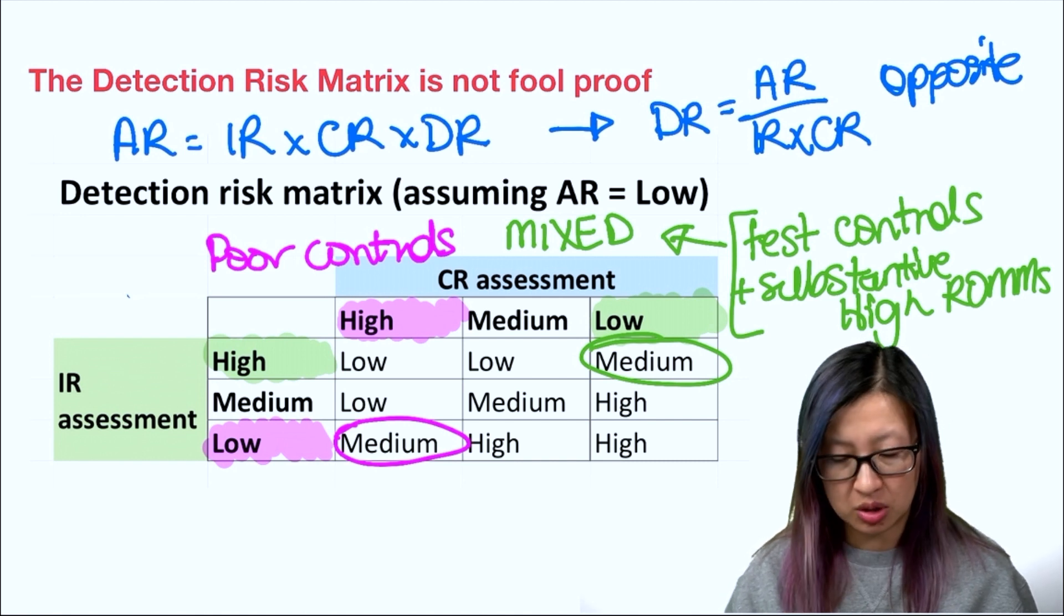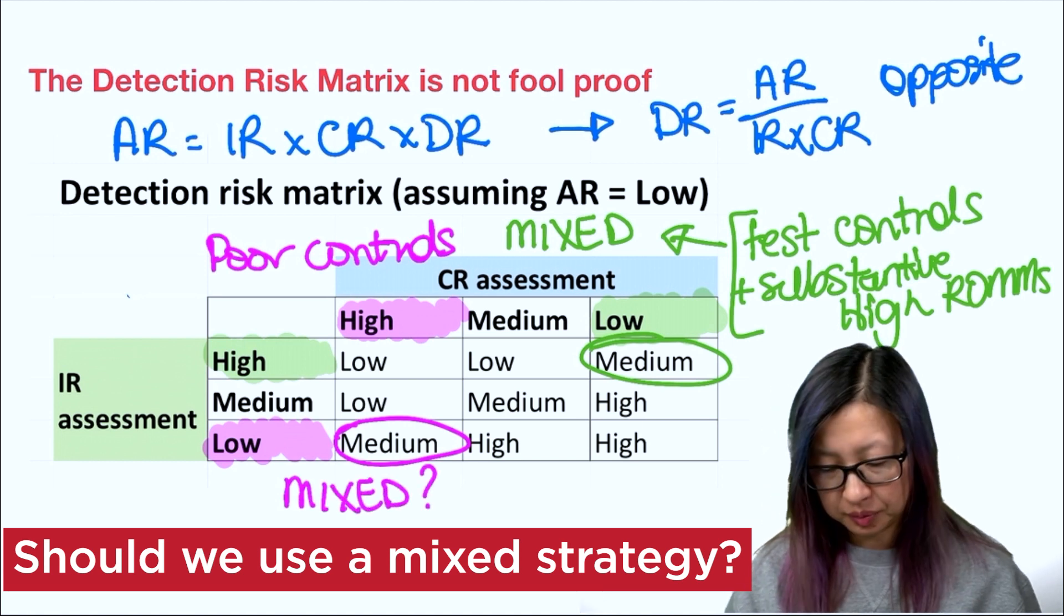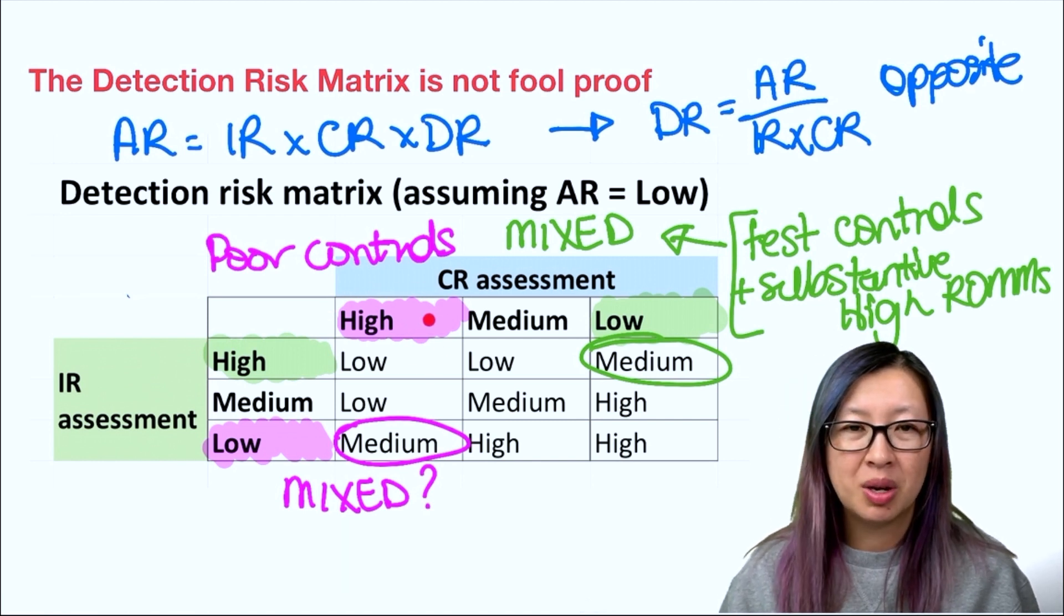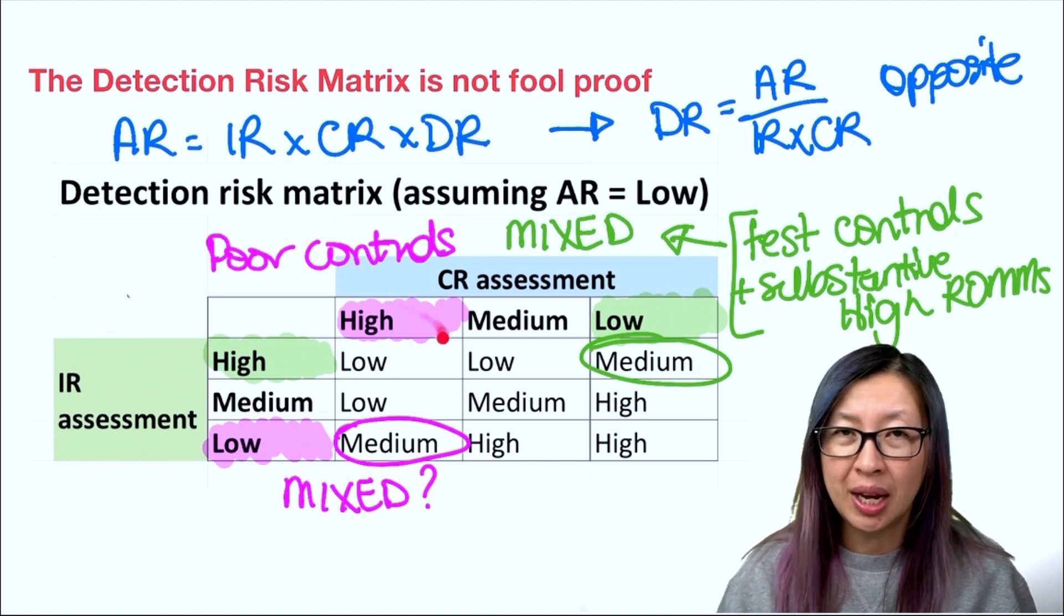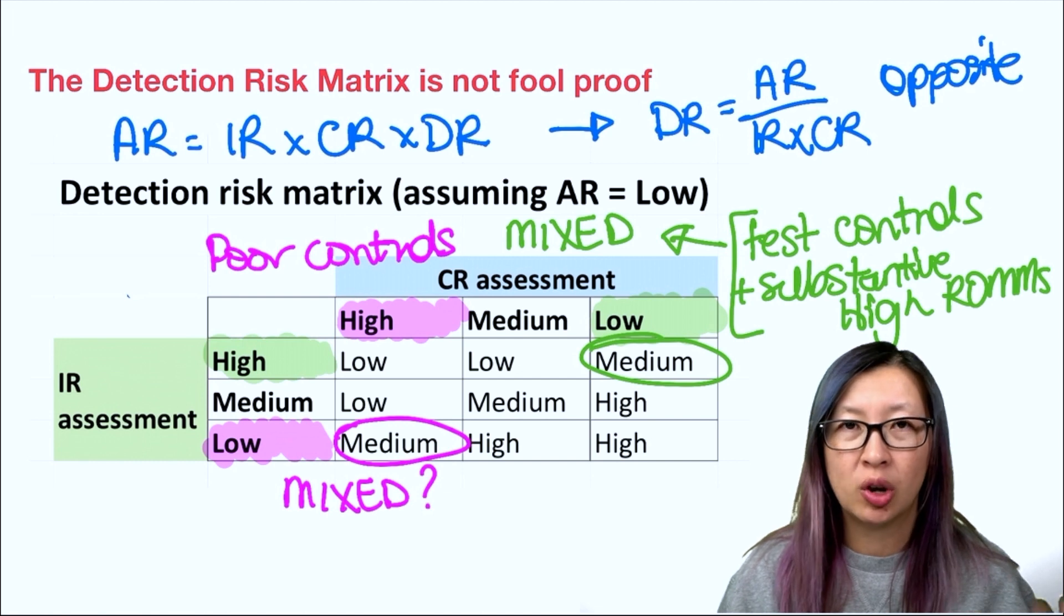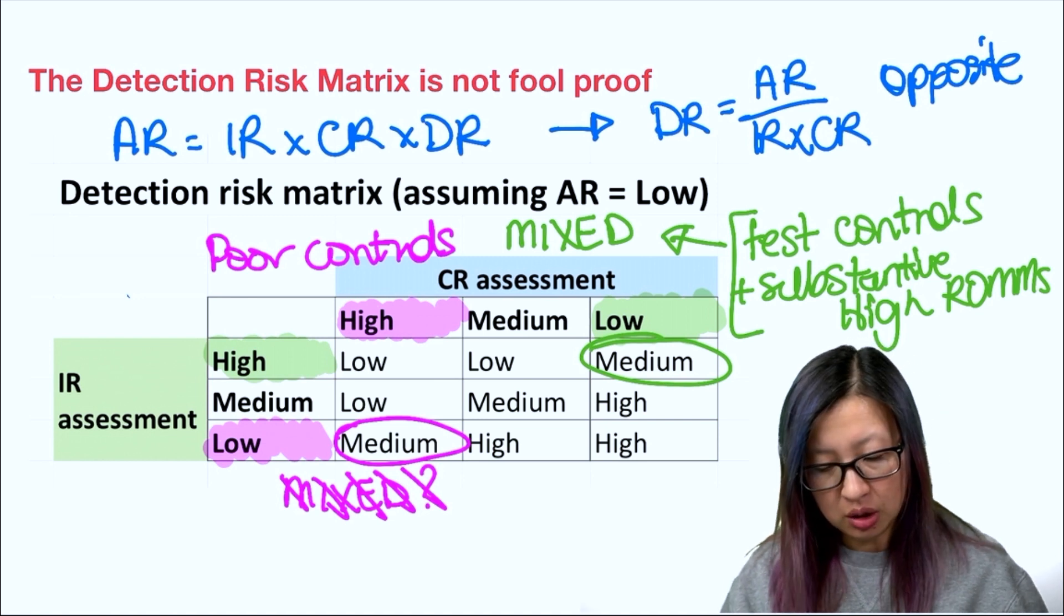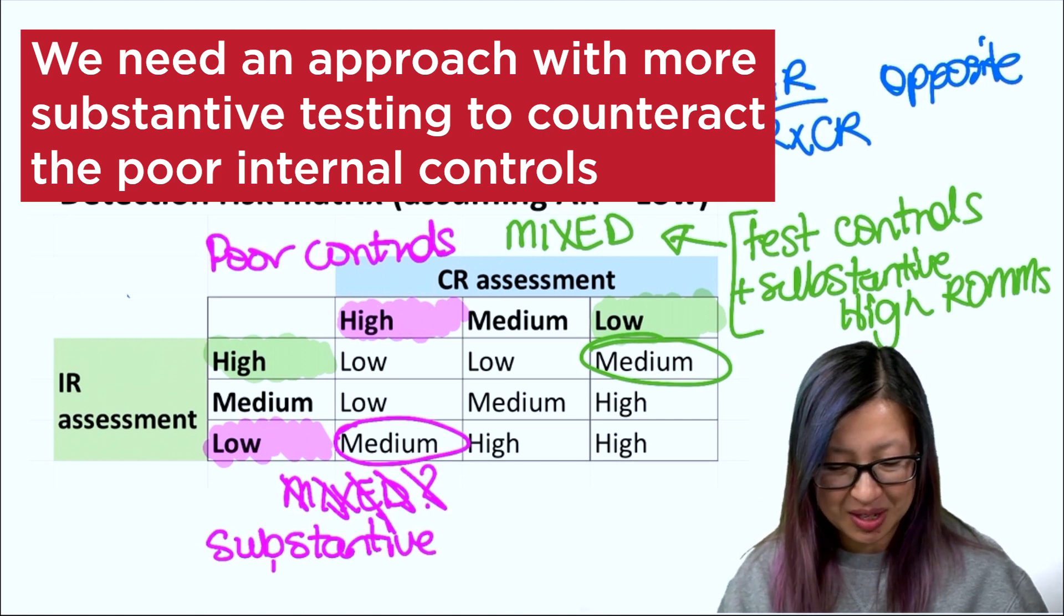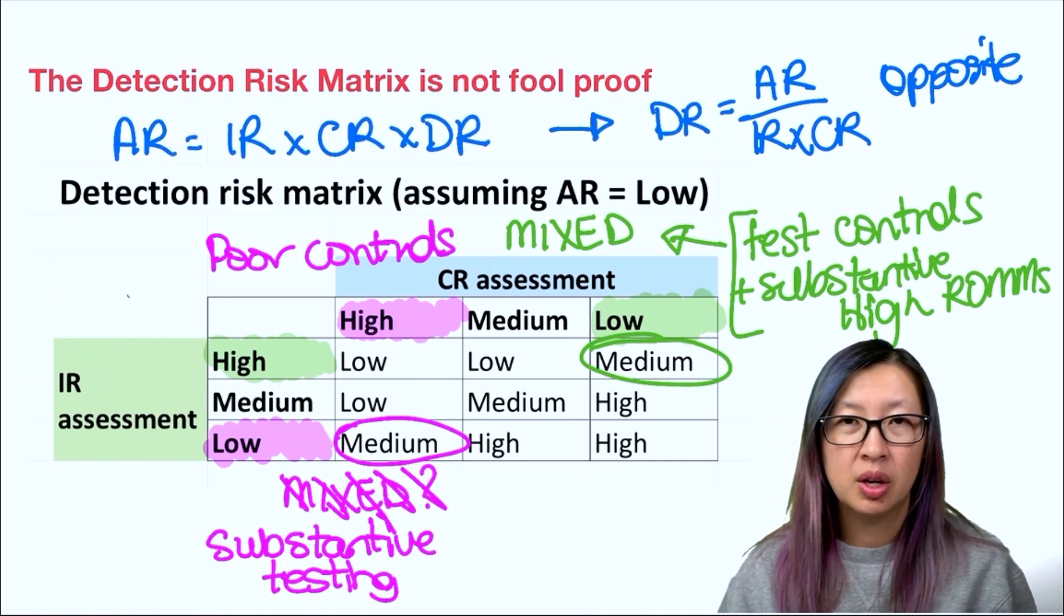So in this instance, is mixed the way to go? Probably not, because you have high internal control risk, which means that there aren't really going to be a lot of good controls to test. And every control weakness also results in a place where there could be more errors that you're going to have to search for substantively. We're not going to do the mixed approach here. We're more likely to do an approach that is heavier on substantive testing because of the high level of control risk.